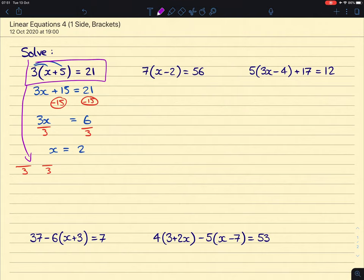then what would happen is that this 3 would disappear, leaving you with x plus 5, basically just a bracket. And then the right-hand side, the 21, would become 7. And then from there, you could take away 5 from both sides and end up with x equals 2.